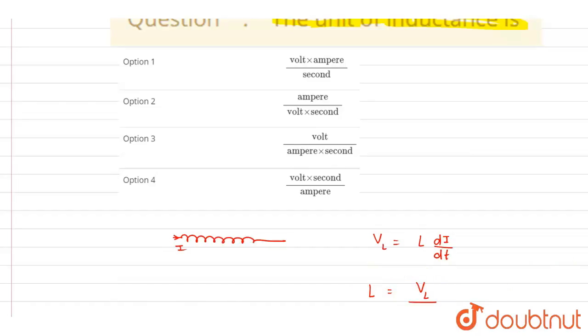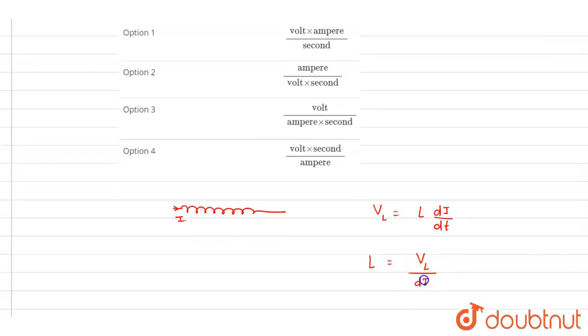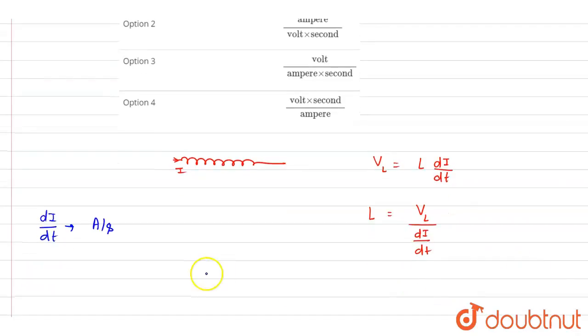So if you see here, the rate of change of current, the unit of this is ampere per second. The unit of current is ampere, unit of time is second. So if you see, I will write down the unit of this is volt, and unit of this rate of change of current is ampere per second.